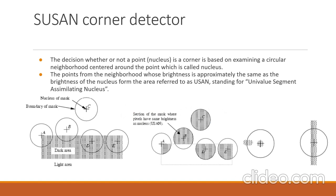Next is the Susan corner detector. The examined point is considered as the nucleus. Whether it is a corner point or not is determined by examining the circular neighborhood around the point. Points from the neighborhood whose brightness is approximately the same as the brightness of the nucleus form the area referred to as USAN. If A, B, C, D, and E are interest points, the USAN area for these points is as shown. If we set a threshold such that if the USAN area is less than the threshold then it is a corner point, we can get only A as a corner point if we set the threshold as 26% of the area.